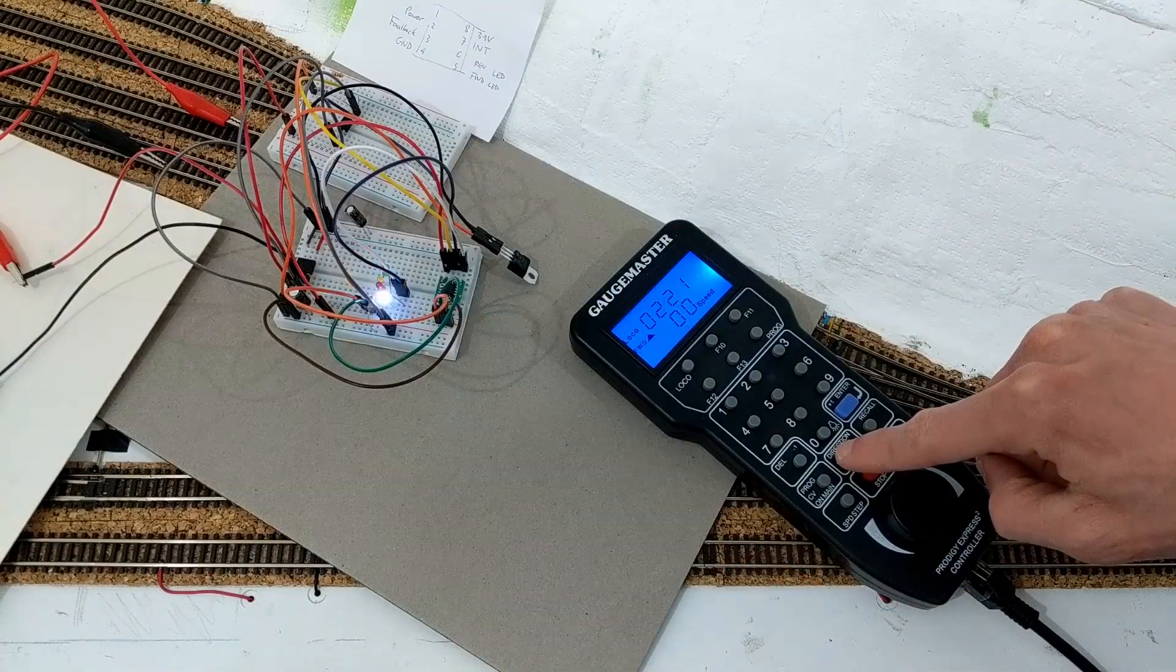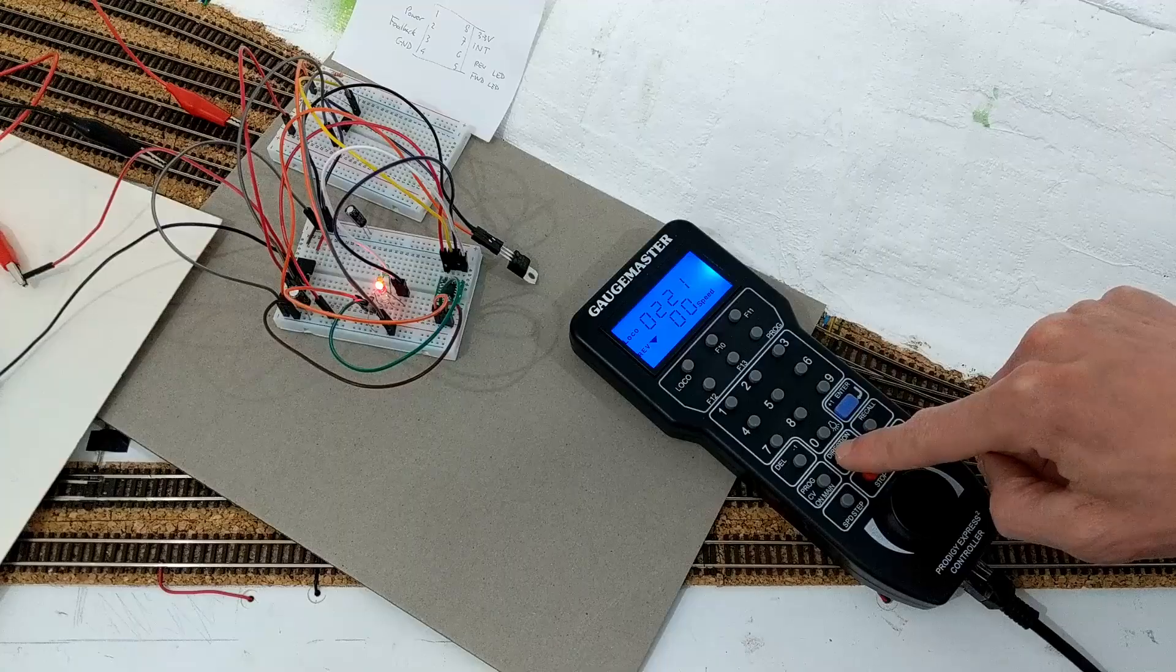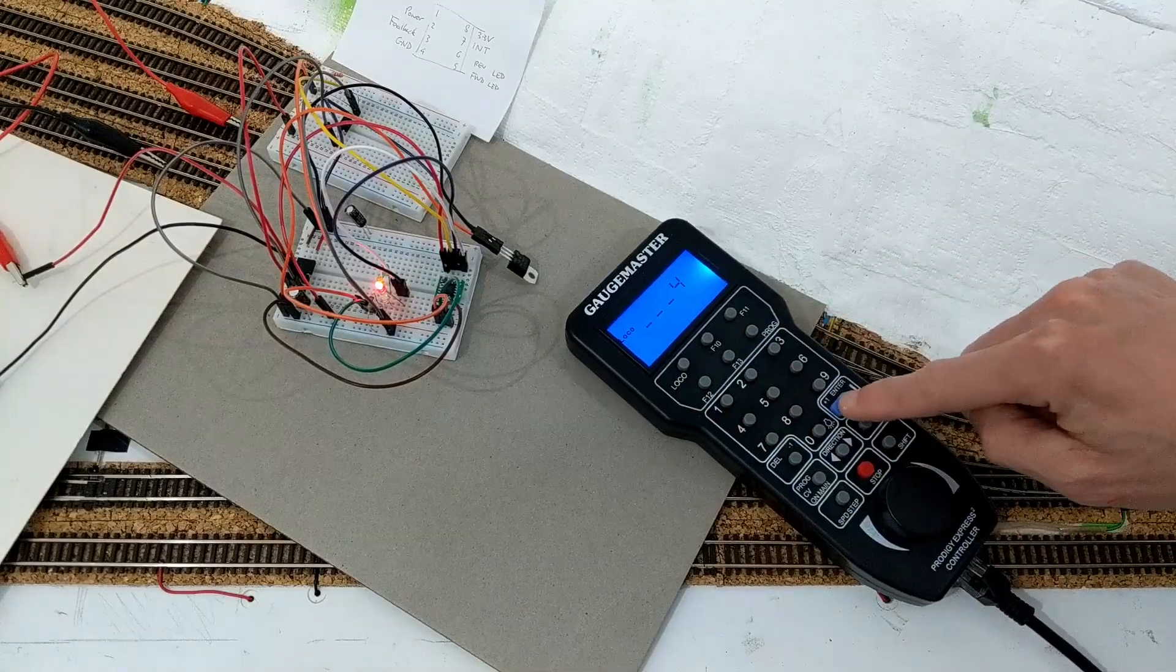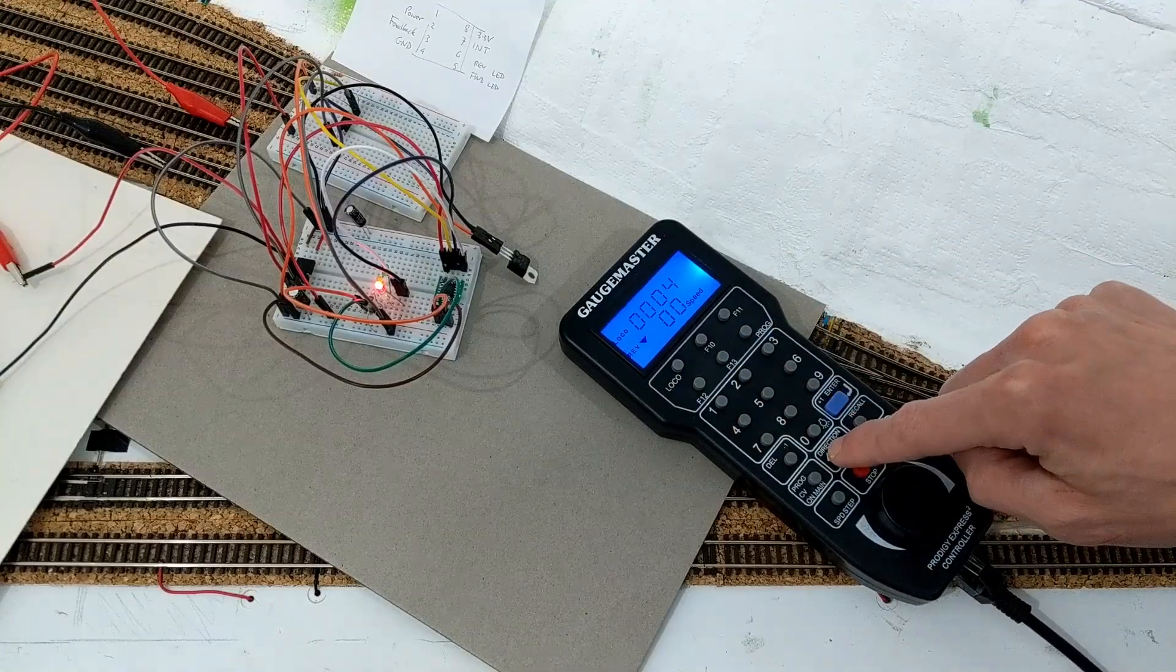In the previous video, I got an ATtiny85 microcontroller to decode the DCC signal from the track and control some LEDs in response to certain DCC commands.